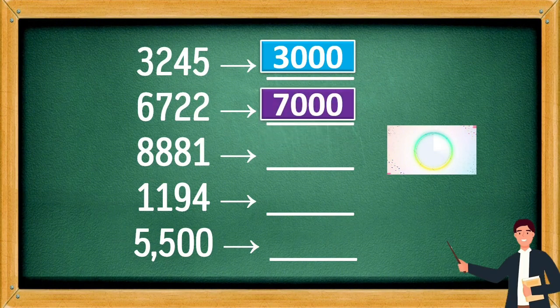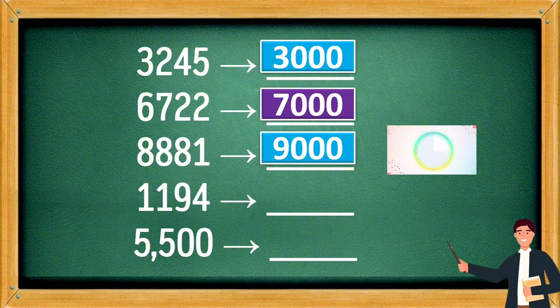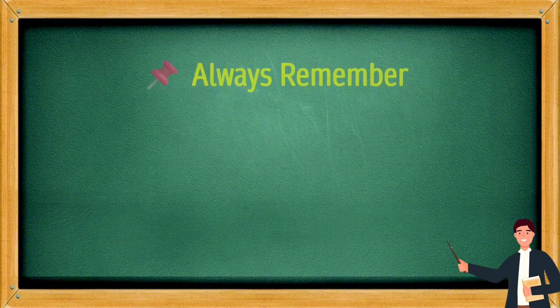8,881 rounds to 9,000. 1,194 rounds to 1,000. 5,500 rounds to 6,000.